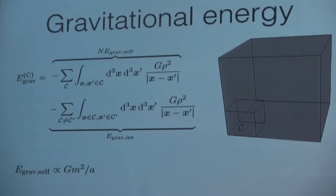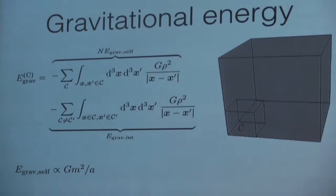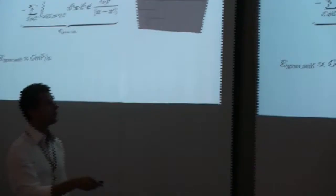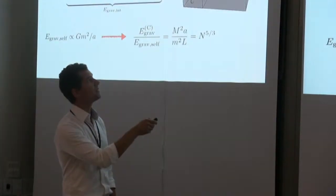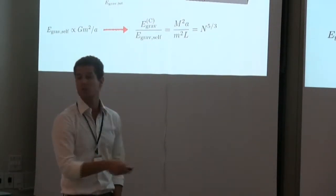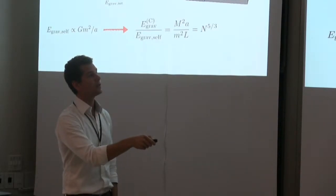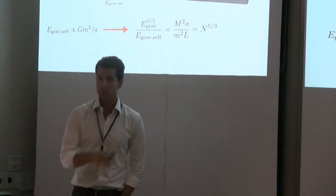I can use this separation to introduce the discrete problem. First, notice that the gravitational self-energy has no scale in gravitation, so it is always proportional to the mass squared of the cell divided by its size — a generic scaling. The self-gravitational energy of a cell and the self-gravitational energy of the whole system are the same system just rescaled. Using these scaling laws, you can calculate that the ratio between the gravitational energy of the whole system and that of one cell goes as N to the 5/3, where N is the number of cells. Then I can replace the first contribution with something proportional to the gravitational energy of the whole system.